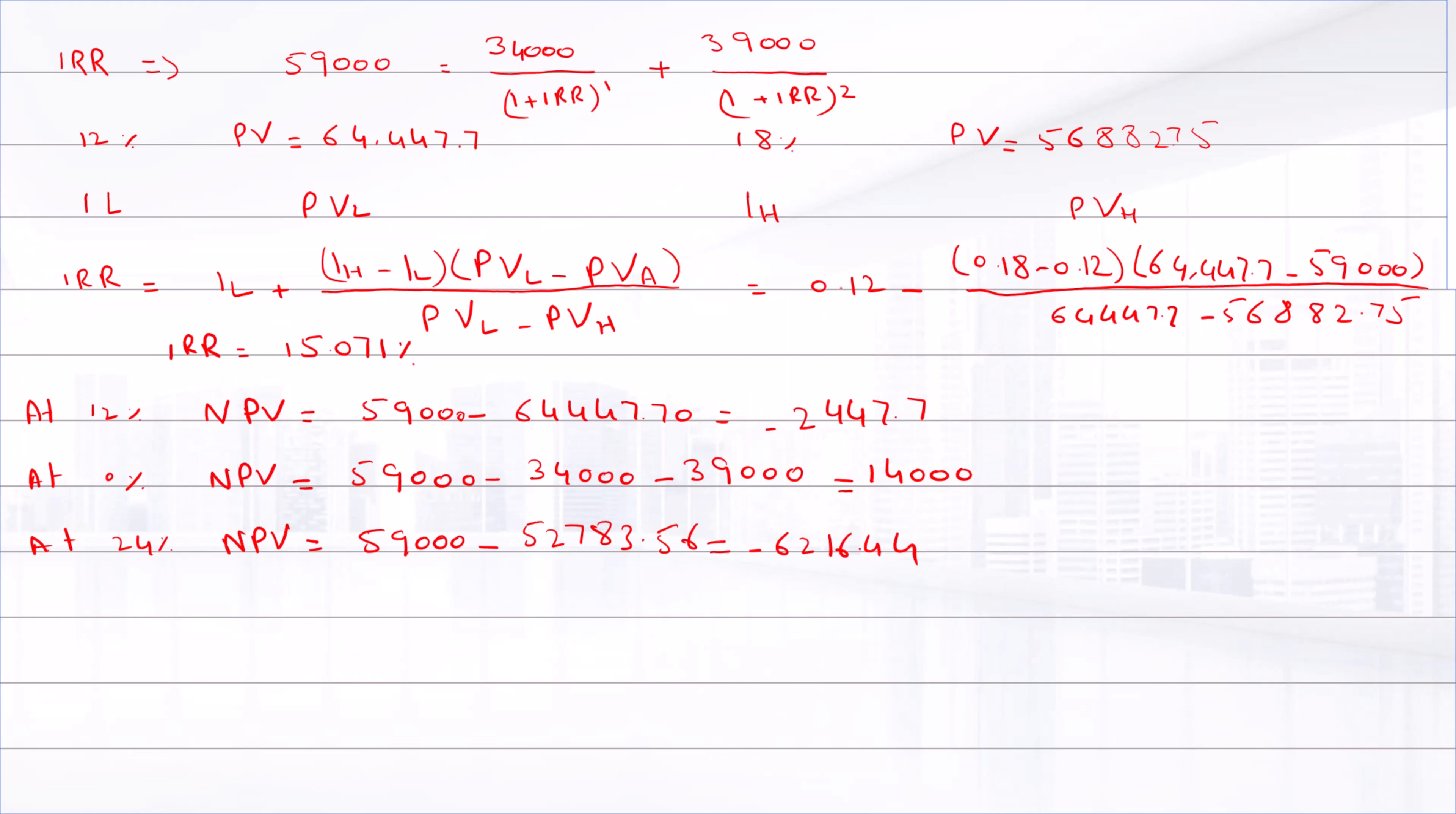The cash flows for the project are unconventional since the initial cash flow is positive and the remaining cash flows are negative. The decision rule for the IRR is invalid in this case. The NPV profile is upward sloping, indicating that the project is more valuable when the interest rate increases.